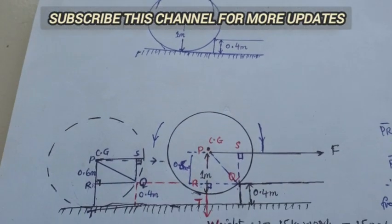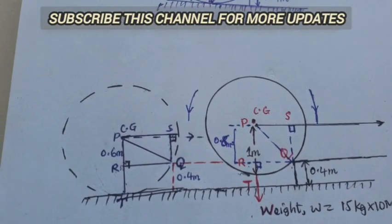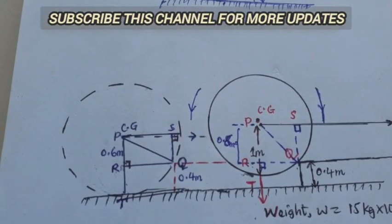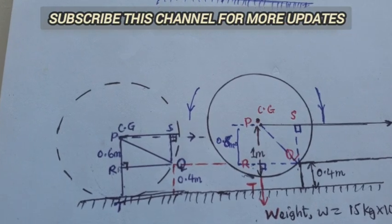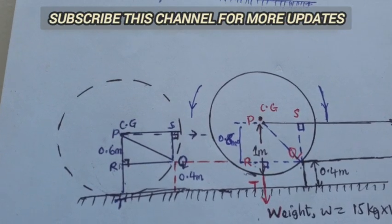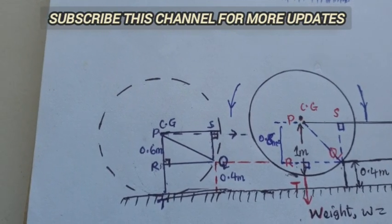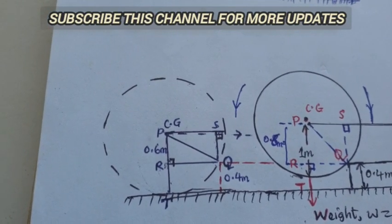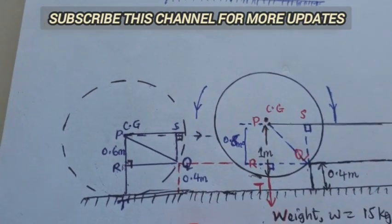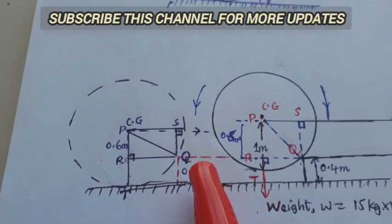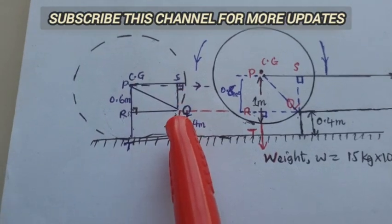Let us consider the diagram below. We have two diagrams here. The first diagram is when the wheel is at contact with the surface. From these diagrams, we try to construct two triangles which are similar. We have triangle PRQ and triangle PSQ.